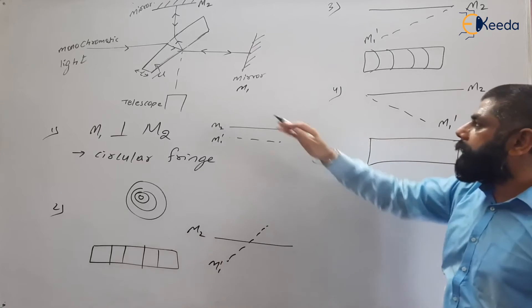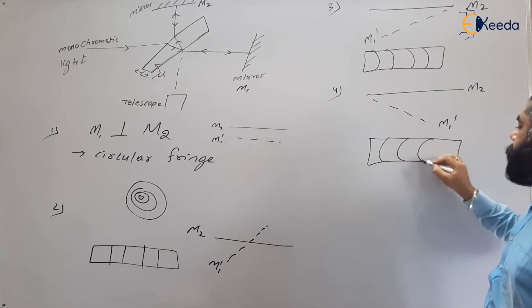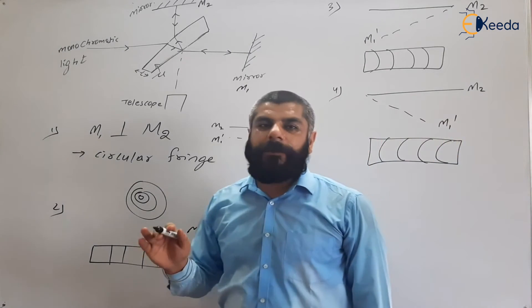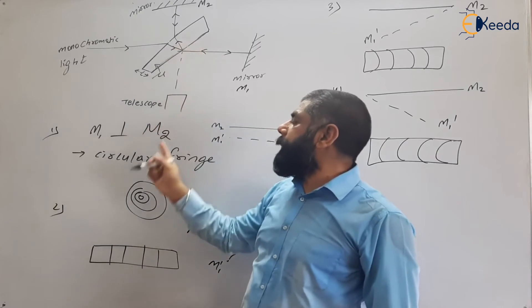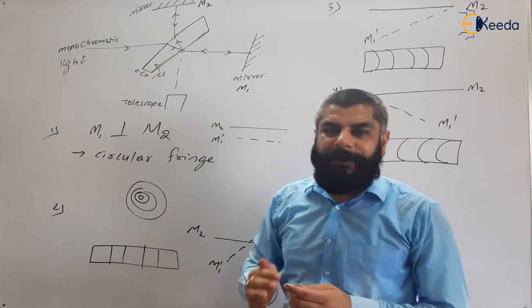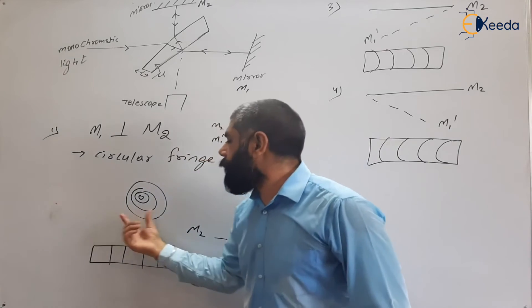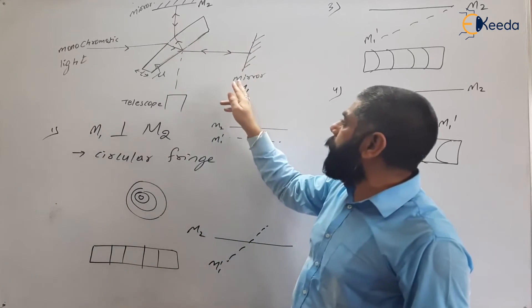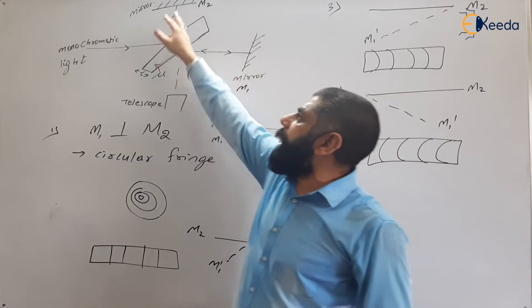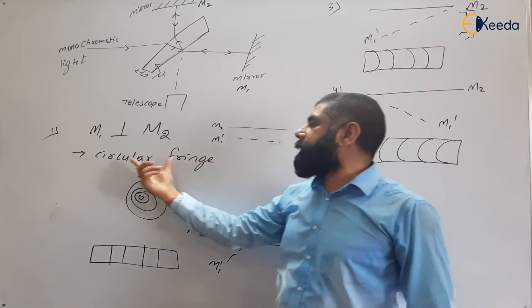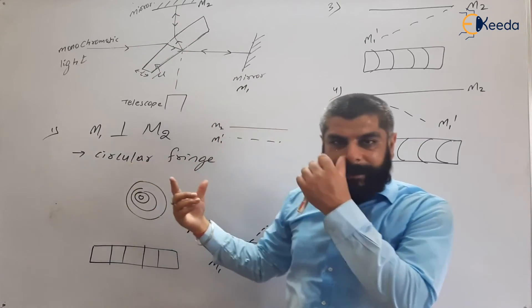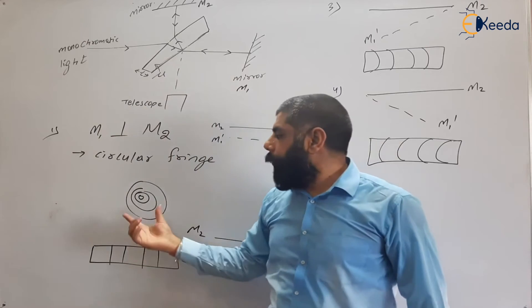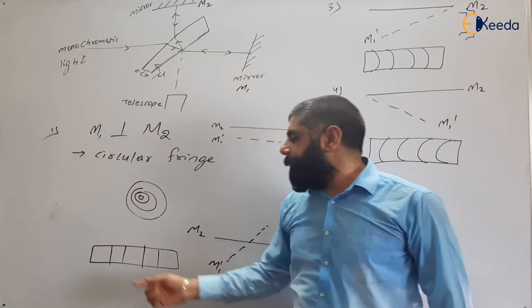If M1-dash intersects M2 at a slight angle (convex configuration), curved fringes are observed — either concave or convex bands. In general, in the Michelson interferometer, circular fringes are observed because the mirrors are placed at 90 degrees to each other. If the angle between M1 and M2 is changed, the fringes become straight bands or curved bands.